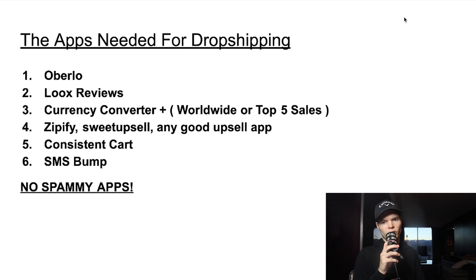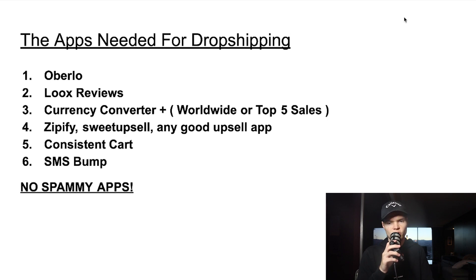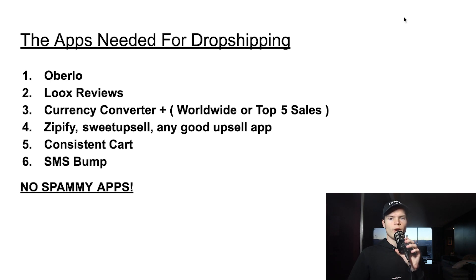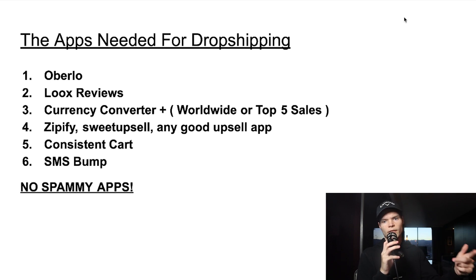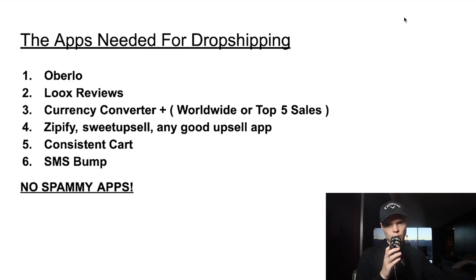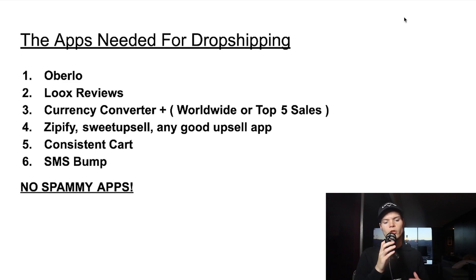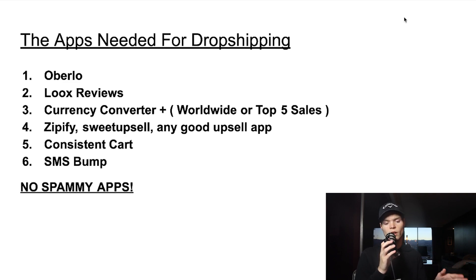Consistent Cart is a super good app to retarget people. If someone put a product in their cart but didn't buy, you can come back to the customer with different offers — like sending a message six hours later saying 'we noticed your cart was abandoned, here's a 20% coupon code,' then again 24 hours later or a week later. SMS Bump is the same thing but for people who put in their phone number instead of their email, so you can retarget them via SMS.